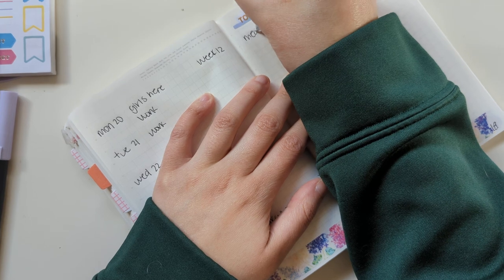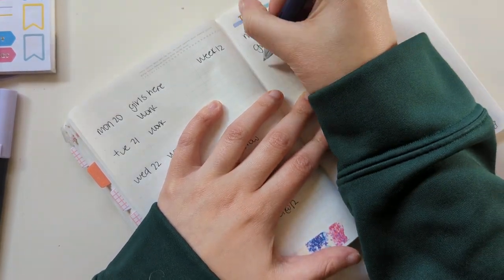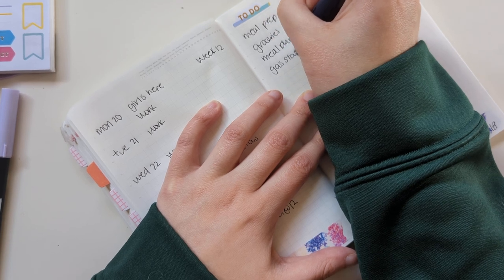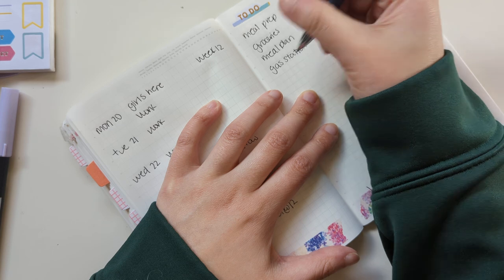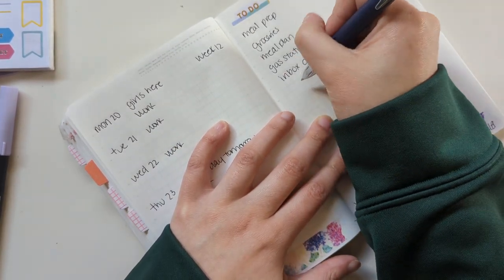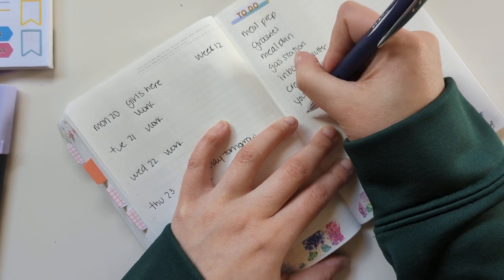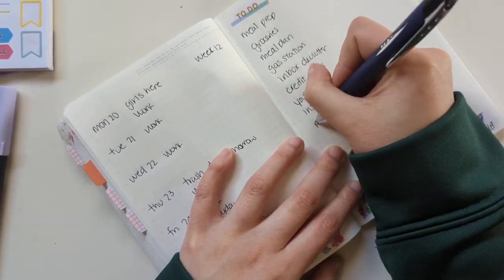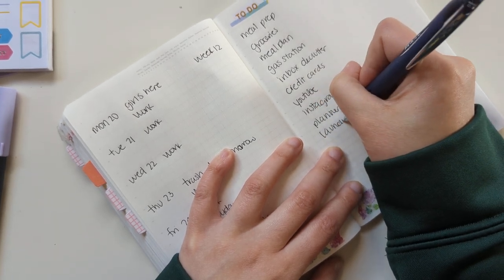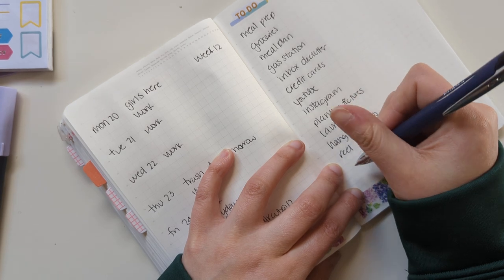So there is that for the week. I am going to mark that it's week 12. And my weekly to-dos that don't really have a day assigned look like meal prep, groceries, meal plan, gas station, inbox declutter, paying off credit cards, YouTube, Instagram, planner pictures, laundry, hang up clothes, hopefully posting a reel and a short.